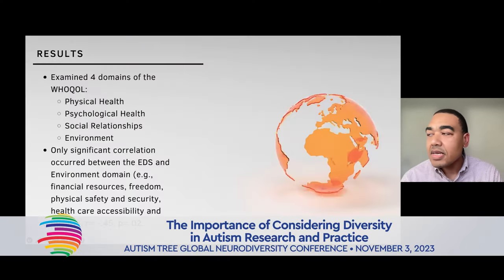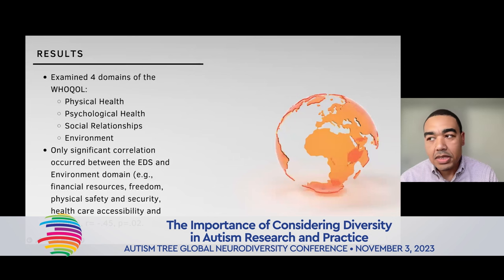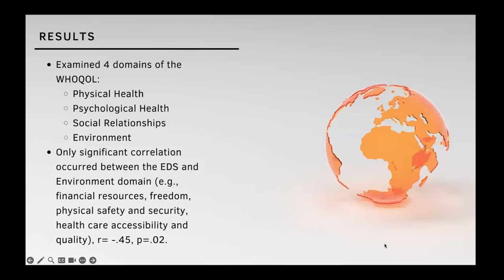As expected, there was a correlation: the more discriminatory encounters families reported, the lower their self-reported quality of life. What was driving this finding within the four subscales of the World Health Quality of Life measure was the environment subscale — where they asked questions around financial resources, personal freedom, physical safety and security, healthcare accessibility, and quality of life.